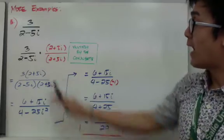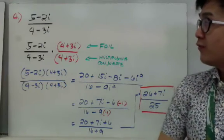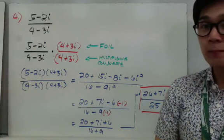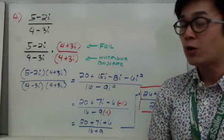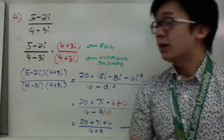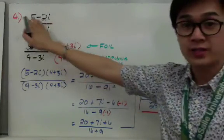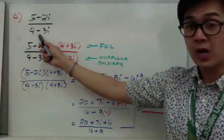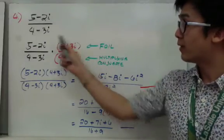For example number 4, the difference is that our numerator has a complete complex number and so does the denominator. So which conjugate do we use — the conjugate of the numerator or the denominator? Following the steps from example number 3, we still use the conjugate of the denominator. The conjugate of 4 minus 3i is 4 plus 3i, and that's what we multiply our entire fraction by.